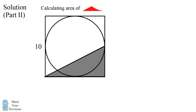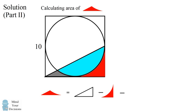We can again solve this by subtraction. We consider this right triangle, remove the portion from the lower right-hand corner, and then remove this portion of the circle. What remains is the area of the lower left-hand corner. So the area we want equals the area of the triangle minus the area of the piece in the lower right-hand corner minus this piece of the circle.